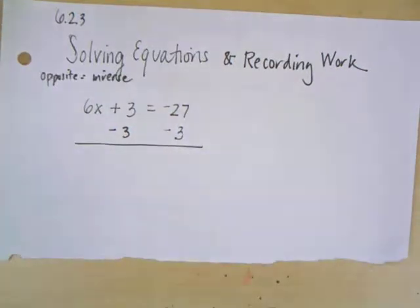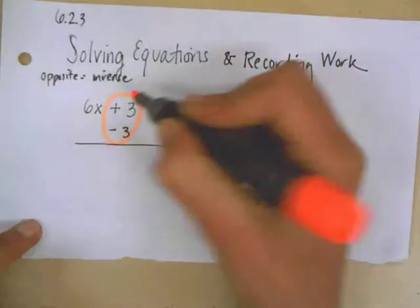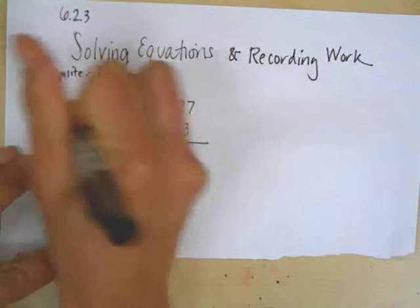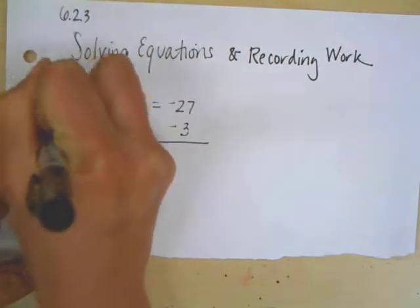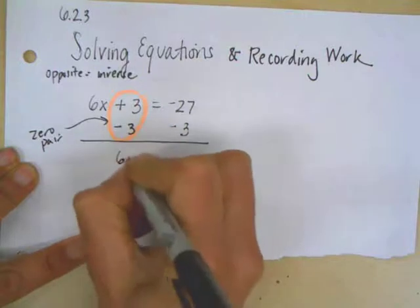And then I can see, what do I have next? Well, I'm trying to simplify things and I can simplify it here because I have a plus 3 and a minus 3. That is a zero pair. So that's going to cancel out.